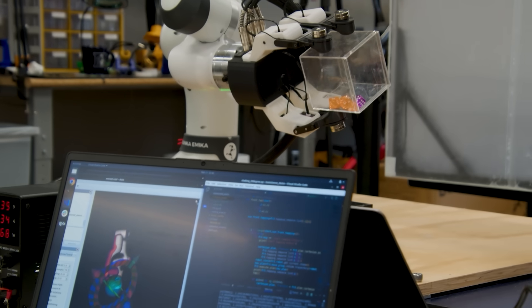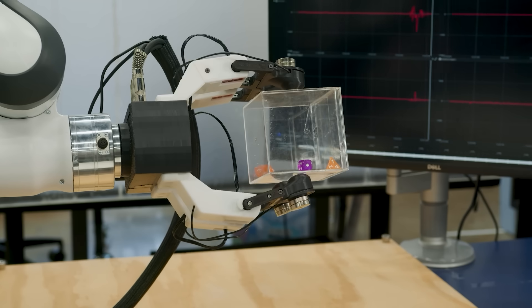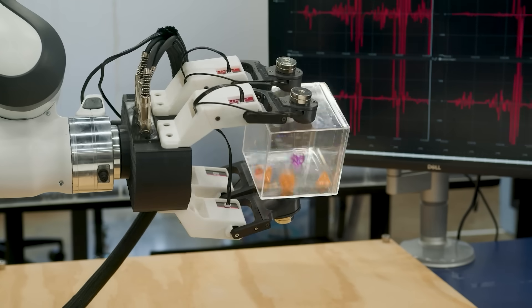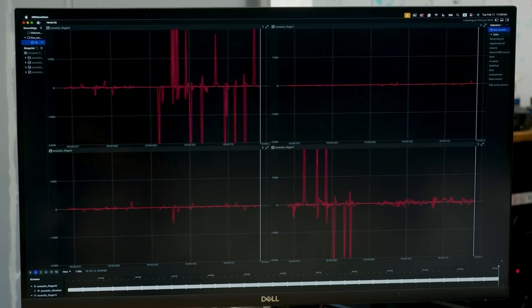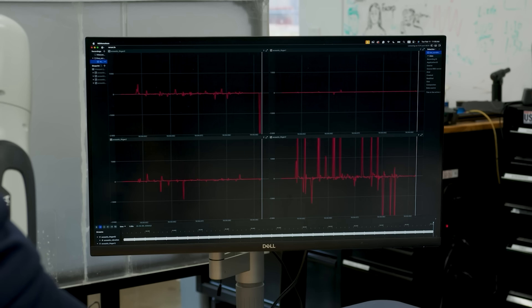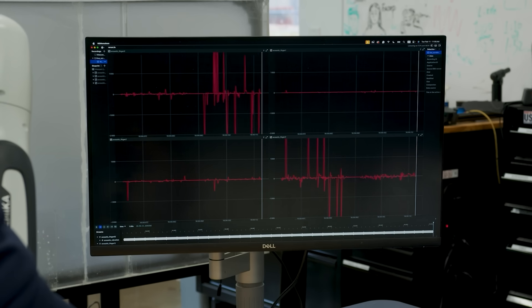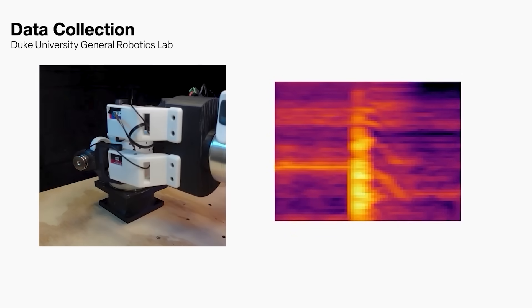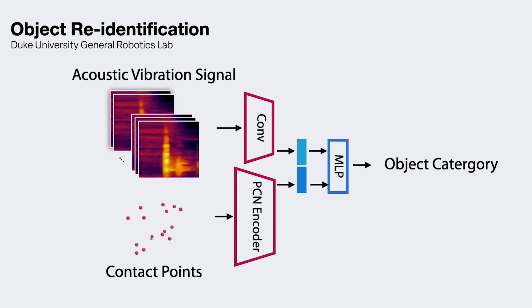When you first collect signals from the Sonic Sense, what you have is time series data that shows the volume or amplitude of the sound. In signal processing, one very powerful way to look at the signals is to convert them from time domain to frequency domain. When we do this conversion, it goes from a waveform to something we call a spectrogram. The spectrogram has very unique features, just like images, and we can use state-of-the-art machine learning models to understand this data.